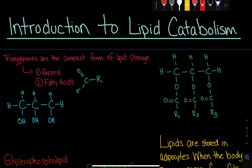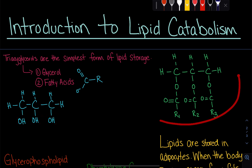Here we're going to go over a brief overview of what happens during lipid catabolism, what the overall goal is, and what our components are. When we talk about lipid catabolism, we're talking about lipids. Lipids are made up of fats and glycerol. The simplest form in which we can store lipids is by taking a glycerol and adding fatty acids to its three hydroxyl groups, and the end product we get is a triacylglycerol.